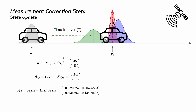Now we do the correction step, starting by calculating the Kalman gain. Looking at the values: for the position state, the Kalman gain is very close to one, meaning we trust the GPS position more than the predicted value — so we apply a large correction to the position state based on GPS. For the velocity state, the Kalman gain is close to 0.5, meaning we apply approximately 50 percent of the measurement residual as a correction.